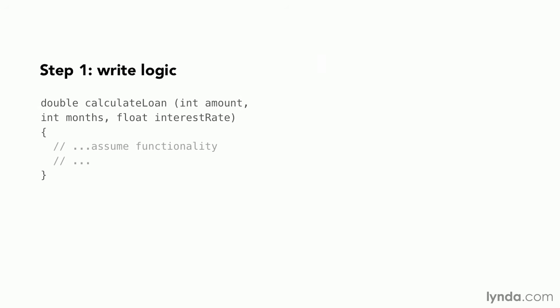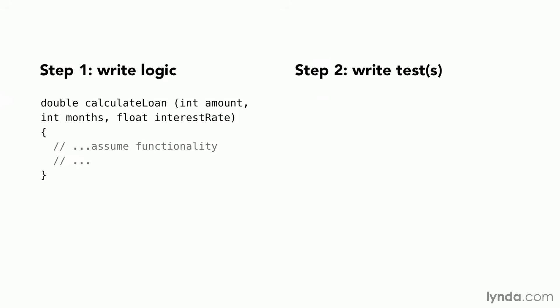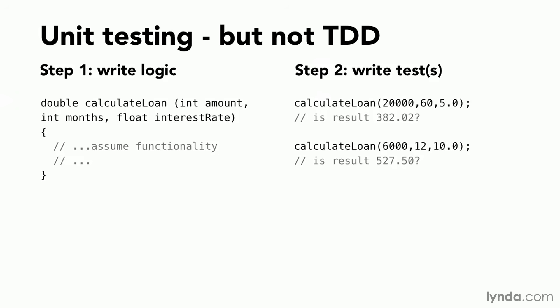When most developers first encounter this idea of automated unit tests — of writing code that tests our code — they understandably assume the process goes like this: first, write a bunch of normal application logic, then write automated unit tests to check and verify that logic. For example, we might write a method called calculateLoan, add some functionality, compile it, and then think about creating a few tests to verify expected results. This is unit testing — testing and validating an individual method, down to the individual unit in the code. But this is not test-driven development.